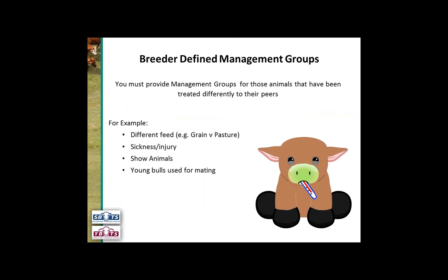Another example is where breeders use yearling bulls for mating. Those bulls could be going out sometime after their 400-day weigh. It clearly wouldn't be fair to compare bulls used for mating with those that haven't been, at their 600-day weigh. So after the 400-day weigh, any yearling bulls used for mating need to be defined as a separate management group.